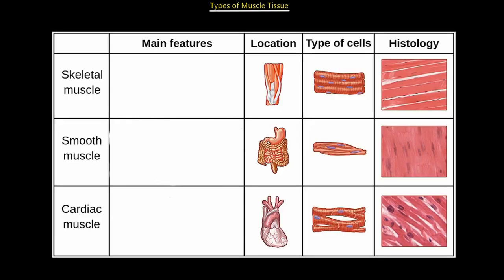Now moving on to the next type of tissue — that's going to be muscle tissue. That's the third tissue we're studying in this animal tissue unit. We begin with a diagram that's going to highlight everything we need to know about muscle tissue for this exam. We must recognize that there are three types of muscle tissue — they're not all the same. Each one has different features and different functionalities.